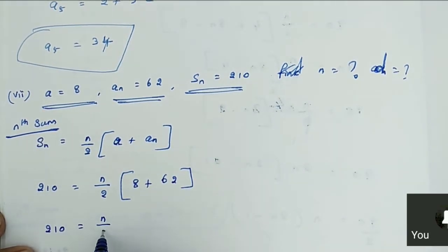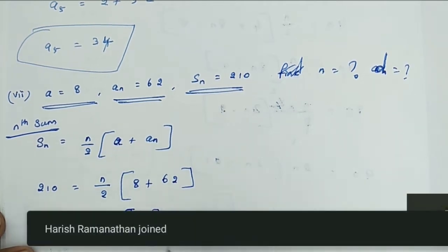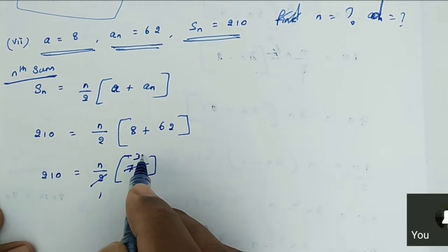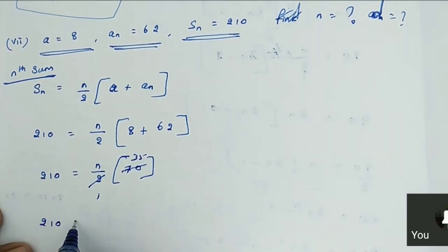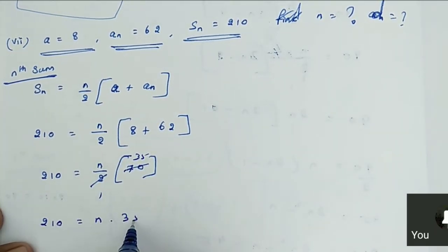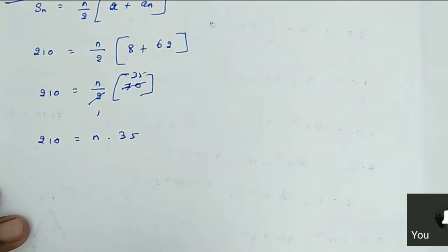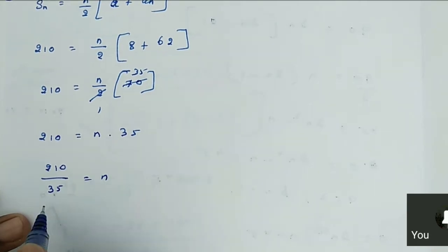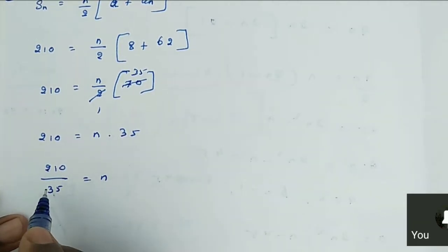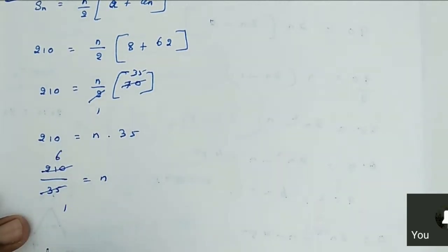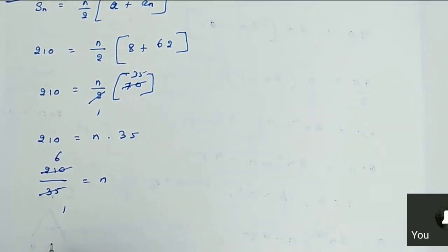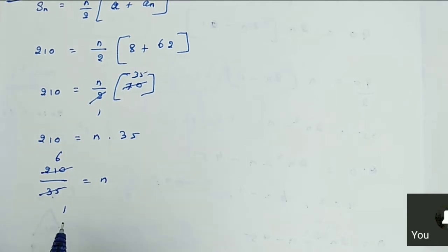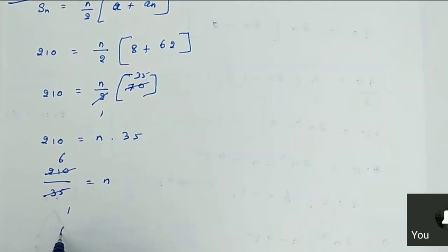210 is equal to N by 2, so 8 plus 62 is 70. Now we can cancel it — 2's cancel to 35. So 210 is equal to N into 35. Then 210 divided by 35 is equal to N. 35 goes into 210: 6 times 35 is 210. So 6 is equal to N.